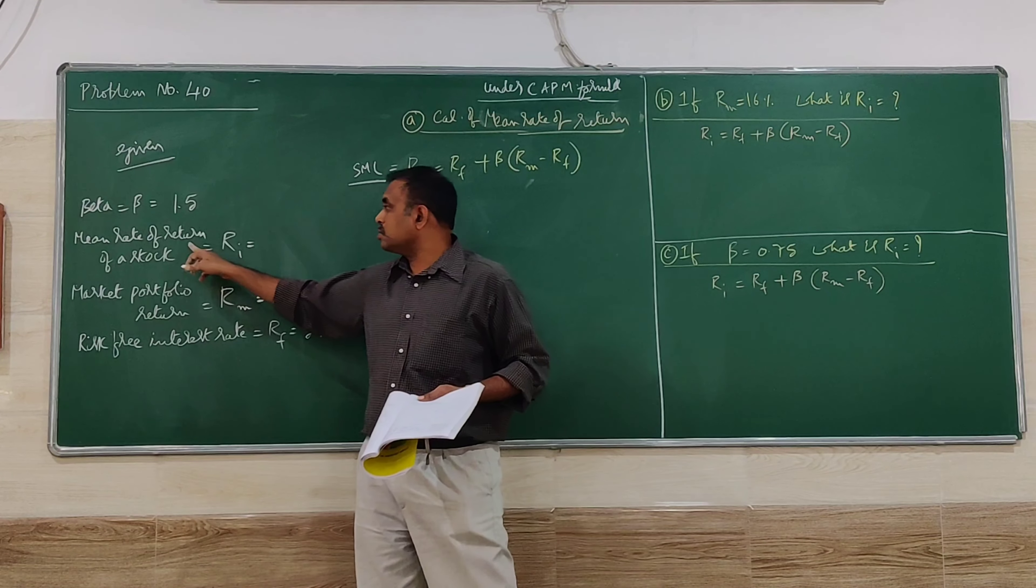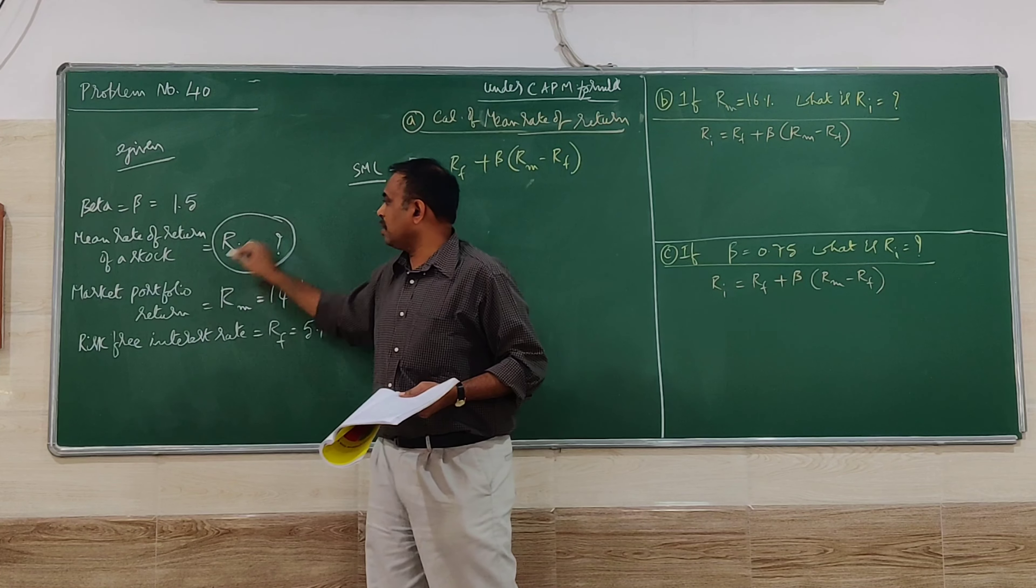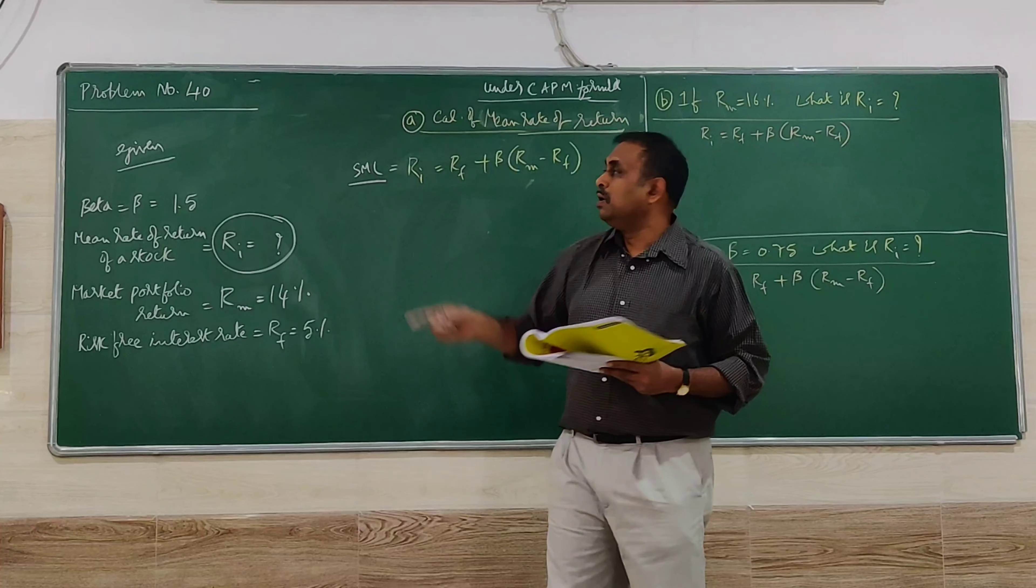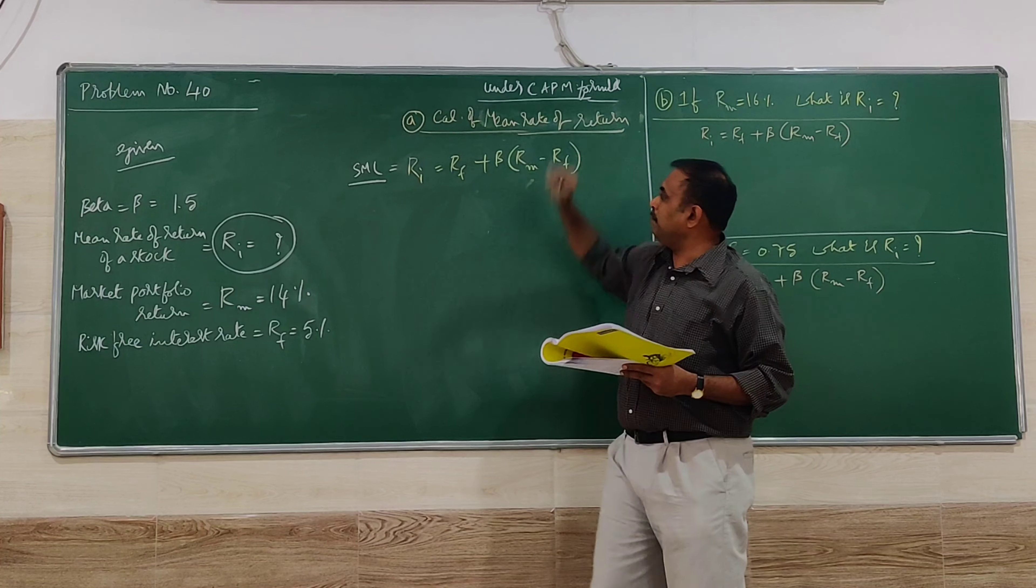Expected return for the security (RI) is not given, which we have to find using the SML formula under CAPM method.